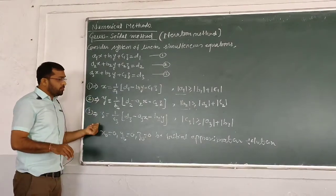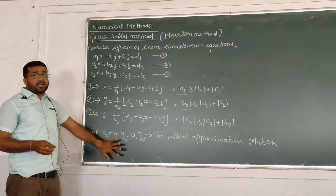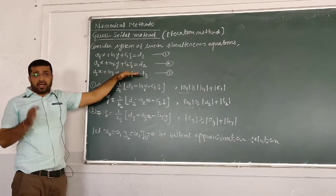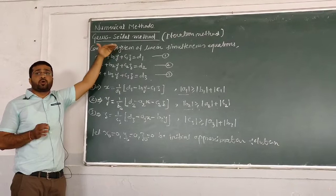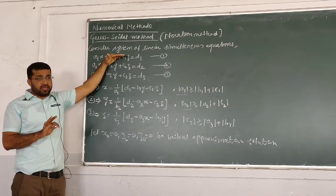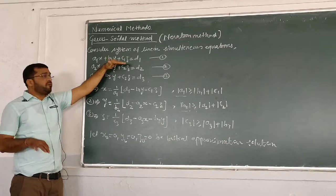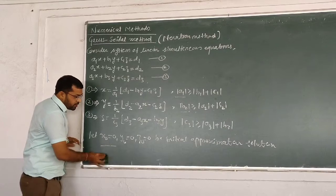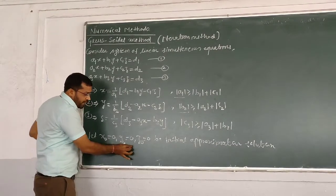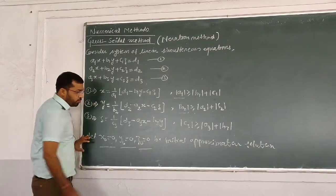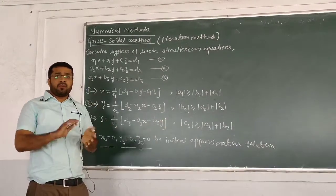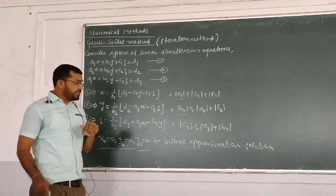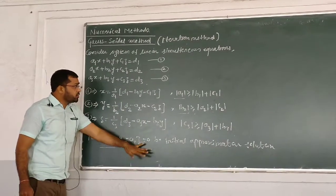We start with an initial approximation to the solution. We begin with x = 0, y = 0, and z = 0 as the initial approximation. Then we perform the iterations by substituting these initial values into the equations.